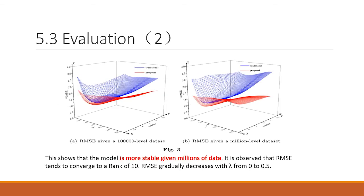In figure 3, this shows that model is more stable given millions of data. RMSE gradually decreases with lambda from 0.1 to 1.0. When the lambda is close to 0.5, the RMSE reaches its lowest value.